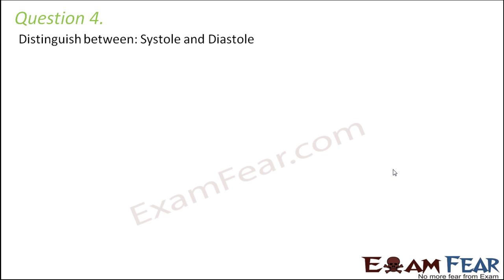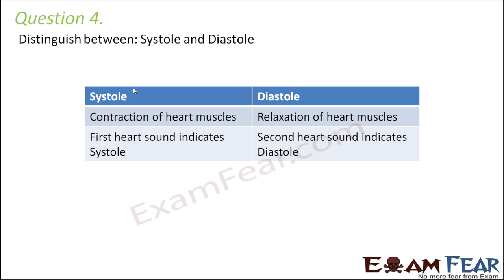Question number four: distinguish between systole and diastole. Systole is the contraction of heart muscles; diastole is the relaxation of heart muscles. The first heart sound heard through a stethoscope is due to auricular systole — specifically due to the closure of the bicuspid and tricuspid valves. The second heart sound is due to the closure of the pulmonary valve and aortic valve, which happens during ventricular diastole as the ventricles begin to relax after ejecting blood.